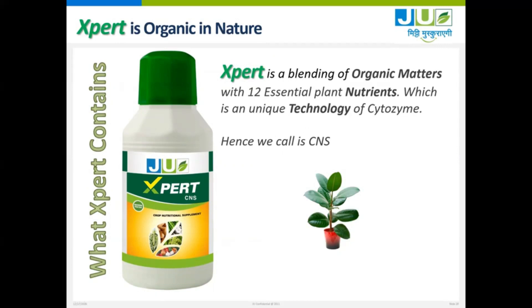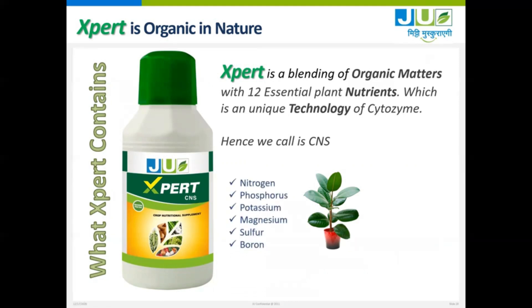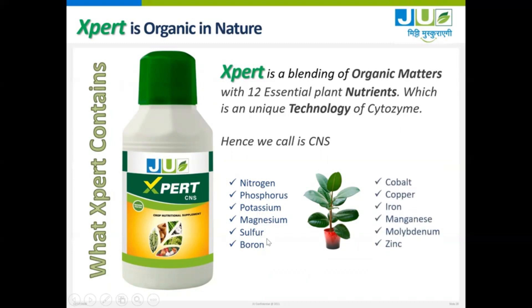We call EXPERT a CNS because it provides many nutrients like Nitrogen, Phosphorus, Potash, Magnesium, Sulphur, Boron, and other micronutrients like Cobalt, Copper, Iron, Magnesium, Molybdenum, and Zinc.